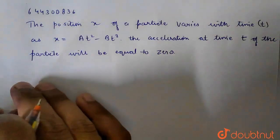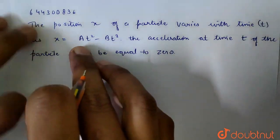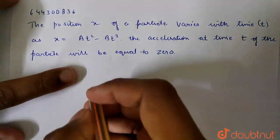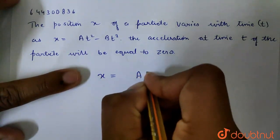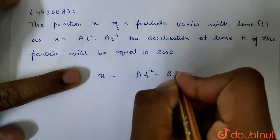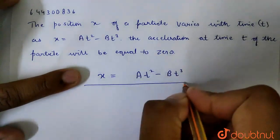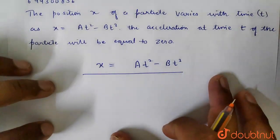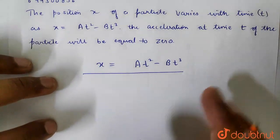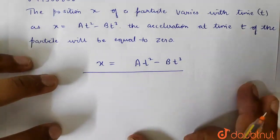Question is: the position x of a particle varies with time as x equals At squared minus Bt cubed. We have displacement or position as a function of time: At squared minus Bt cubed. Then we ask that the acceleration at time t of the particle will be equal to 0. At which time will the acceleration be 0?